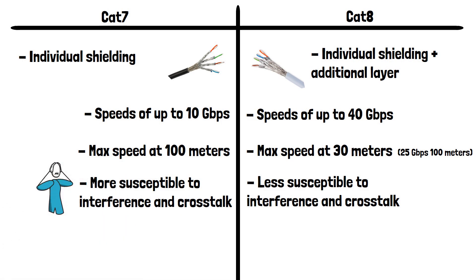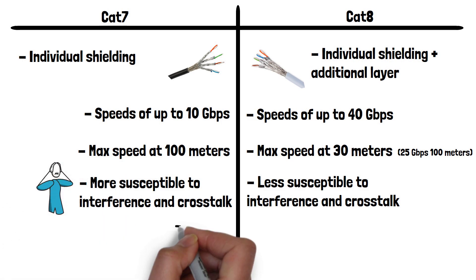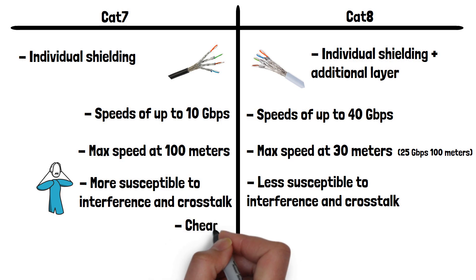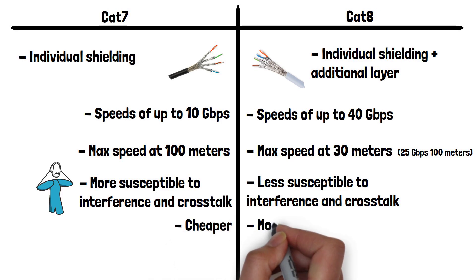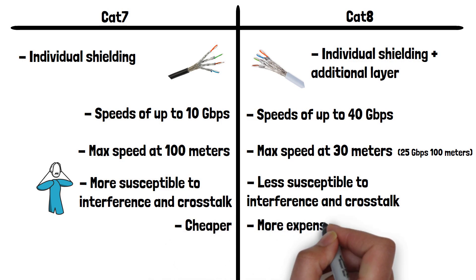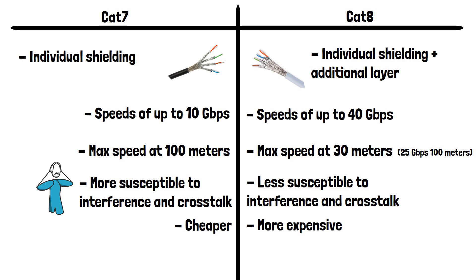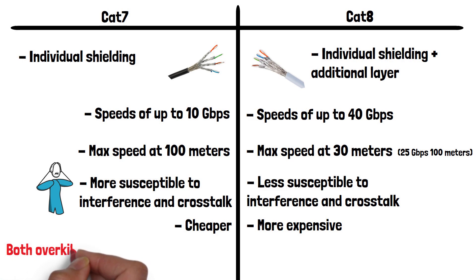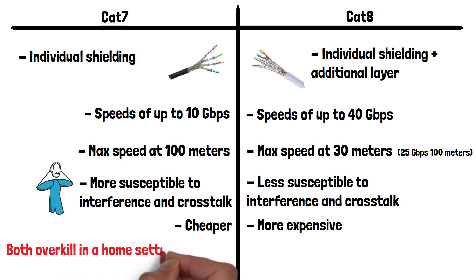Finally, let's look at cost. CAT7 cables are generally less expensive than CAT8 cables due to their lower specifications and performance. However, CAT7 and CAT8 cables are likely to be overkill in a home setting and are usually used in an office or data center where there is likely to be high interference, high amounts of data being transmitted, and extremely long cables in use.